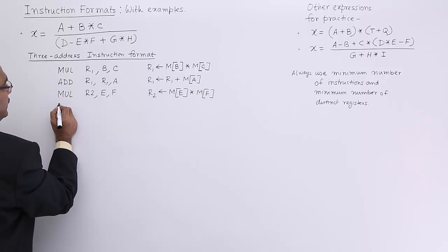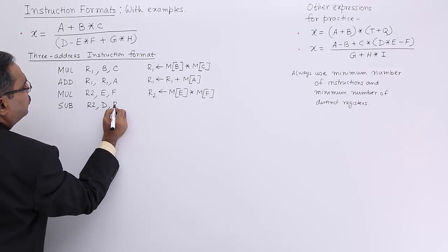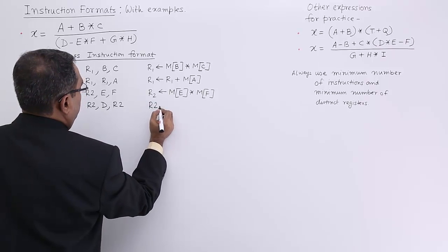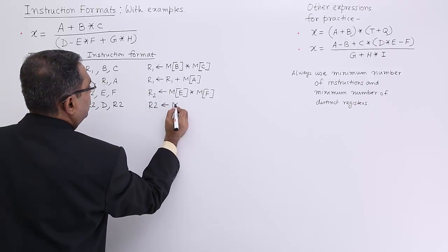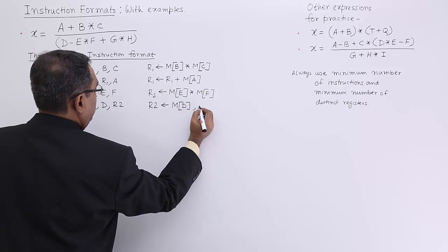D minus this. I am going for sub, say R2, D comma R2. It denotes that R2 is equal to memory content for the variable D and R2.